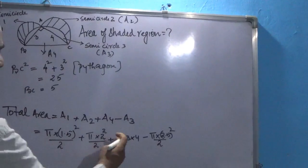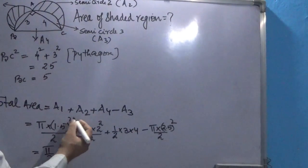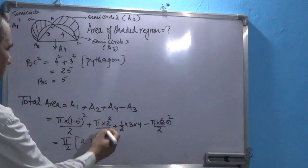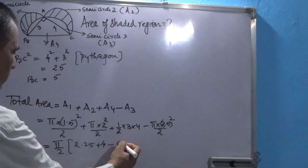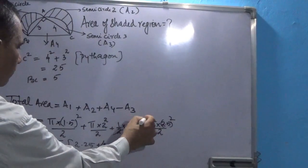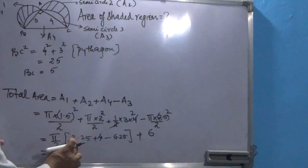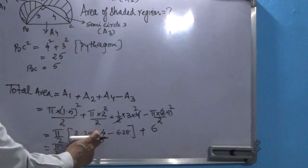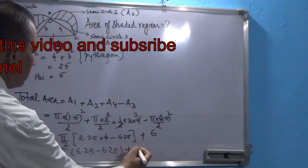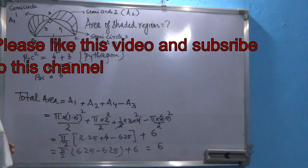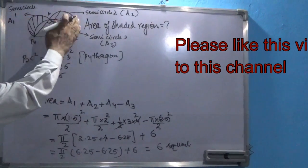We can take π/2 as common from the three semicircle terms. Inside the bracket: 1.5² = 2.25, plus 2² = 4, minus 2.5² = 6.25. So we get 2.25 + 4 − 6.25 = 0. The entire π/2 term cancels out, and we are only left with the area of the triangle, which is 6 square units. So the shaded region is equal to the area of the triangle only, which is 6 square units.